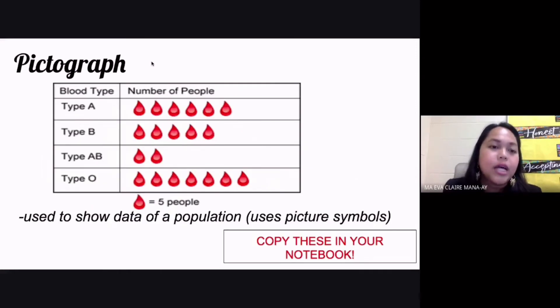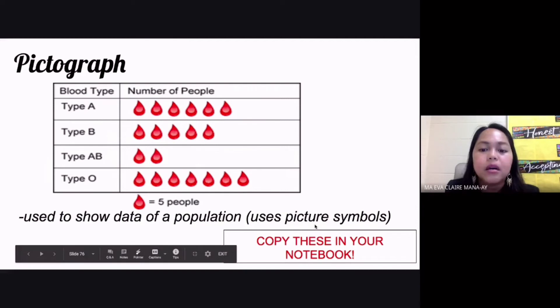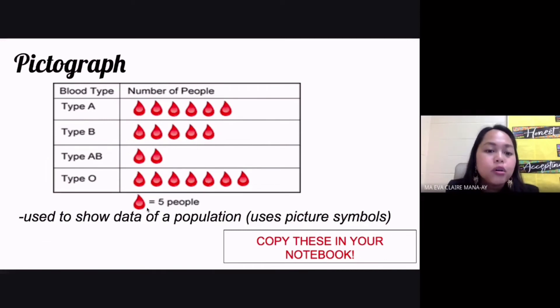The third type of graph is your pictograph. This is a type of graph that shows data of a population using different picture symbols. Whenever you see a question about your pictograph, you should check the key.